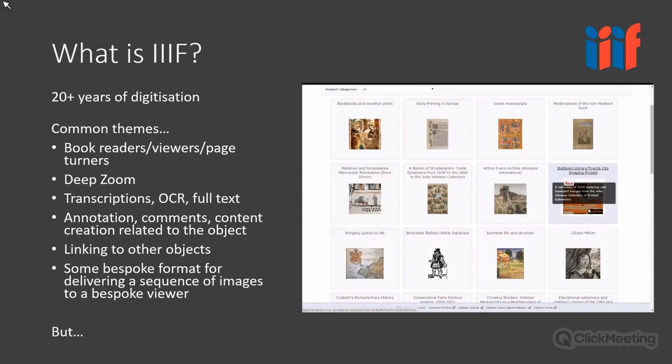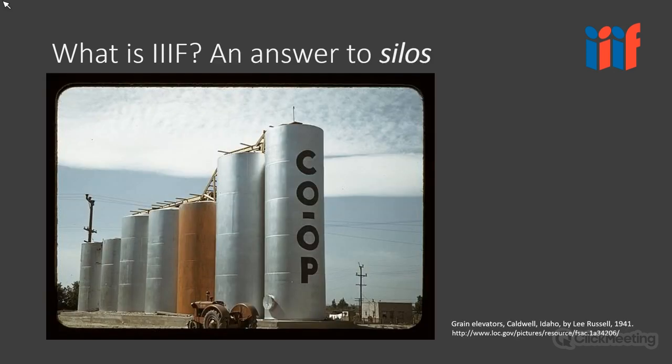All these things have very often common themes. If we digitize books or manuscripts, we present them in book readers or image viewers. Often there's a deep zoom component, transcriptions, OCR, full text available, maybe accompanying text. Sometimes these digitized objects are available for annotation, commentary, and additional content creation. They're often linked to other objects. But what we've been building up till now is a sequence of silos.